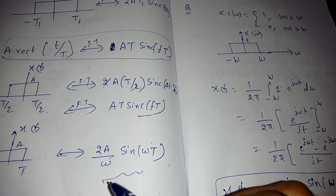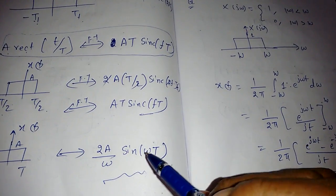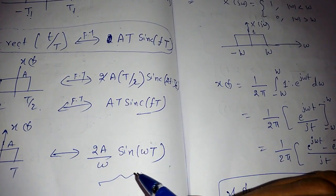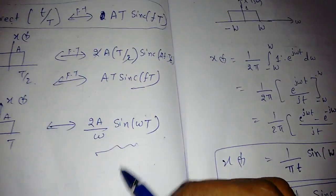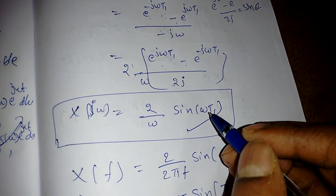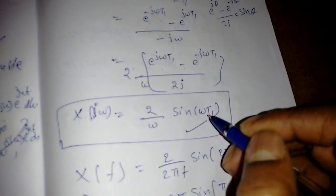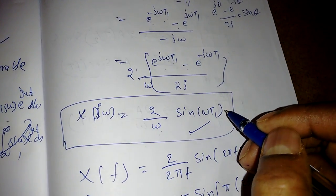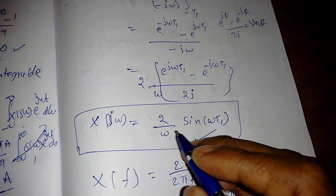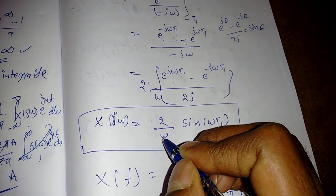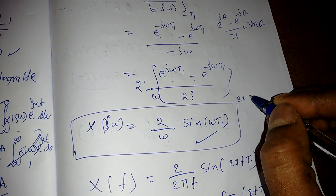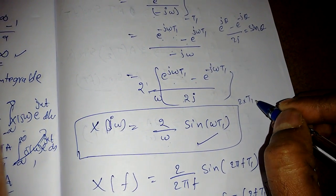The graph of the Fourier transform of the rectangular function is a sinc-shaped function. At ω = 0 we get a 0/0 indeterminate form, so we apply L'Hôpital's rule to (2/ω)·sin(ωt₁). Differentiating numerator and denominator gives 2·cos(ωt₁)·t₁ in the numerator and 1 in the denominator. At ω = 0 this evaluates to 2t₁.